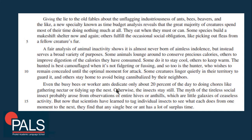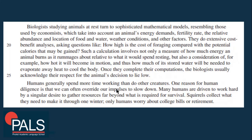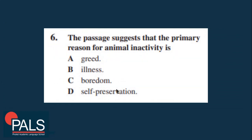Please pause your screen to read the passage — I divided it into two slides. After reading, let's answer the questions. Question six: the passage suggests that the primary reason for animal inactivity is letter D — self-preservation. Meaning they are conserving their calories, staying away from hunters, or staying still to hunt. The primary reason is for them to save calories.